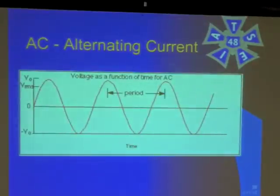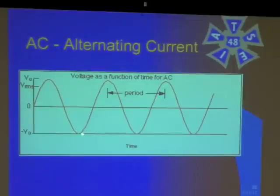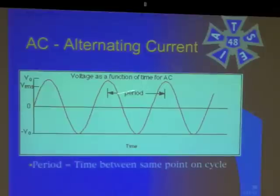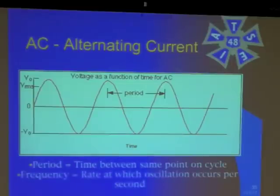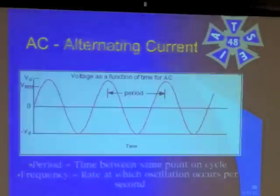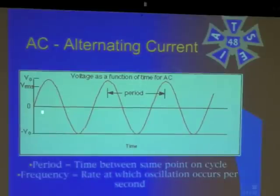When you look at AC on a graph, it starts off at zero, swings positive, then swings negative, then positive and negative — continually alternating between positive and negative. That's what we call alternating current. The distance between any two of the same point on the wave is called the period, and the frequency is the rate at which these oscillations occur per second. In the United States, we use 60-cycle AC, meaning that wave oscillates up and down — one full cycle — 60 times per second.